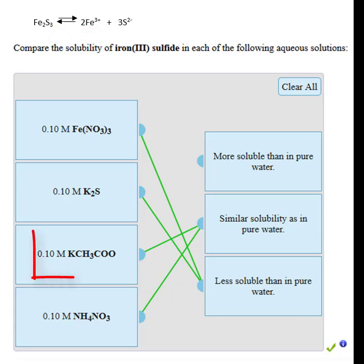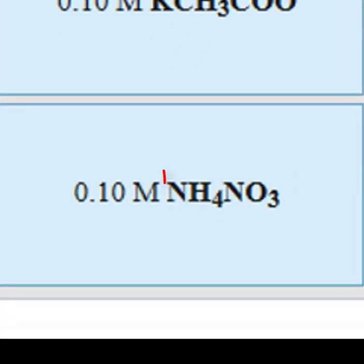Adding potassium acetate has no effect because neither potassium nor acetate are common ions. And the same thing with ammonium nitrate. Neither one are common ions. Although, in the case of ammonium nitrate,